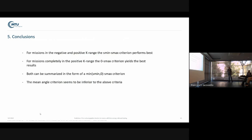The conclusions are that for missions in the negative and positive K range, the dominant cycle criterion performs best. Whereas if the mission is completely in the positive range, especially if the R values are always strictly positive, then the dominant step criterion performs better. Both can be combined in the form of a min(dS min,0) dS max criterion, and the weighted mean criterion seems to be inferior to any of these criteria.